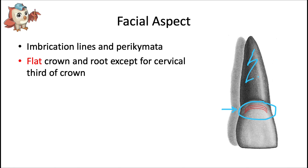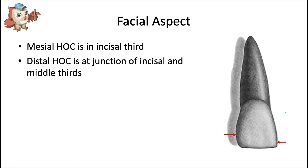The mesial height of contour is in the incisal third of the crown, and the distal height of contour is at the junction of the incisal and middle thirds. This is also where the mesial and distal proximal contacts are, which makes sense because these are the parts of the tooth that stick out the most and where adjacent teeth touch each other.